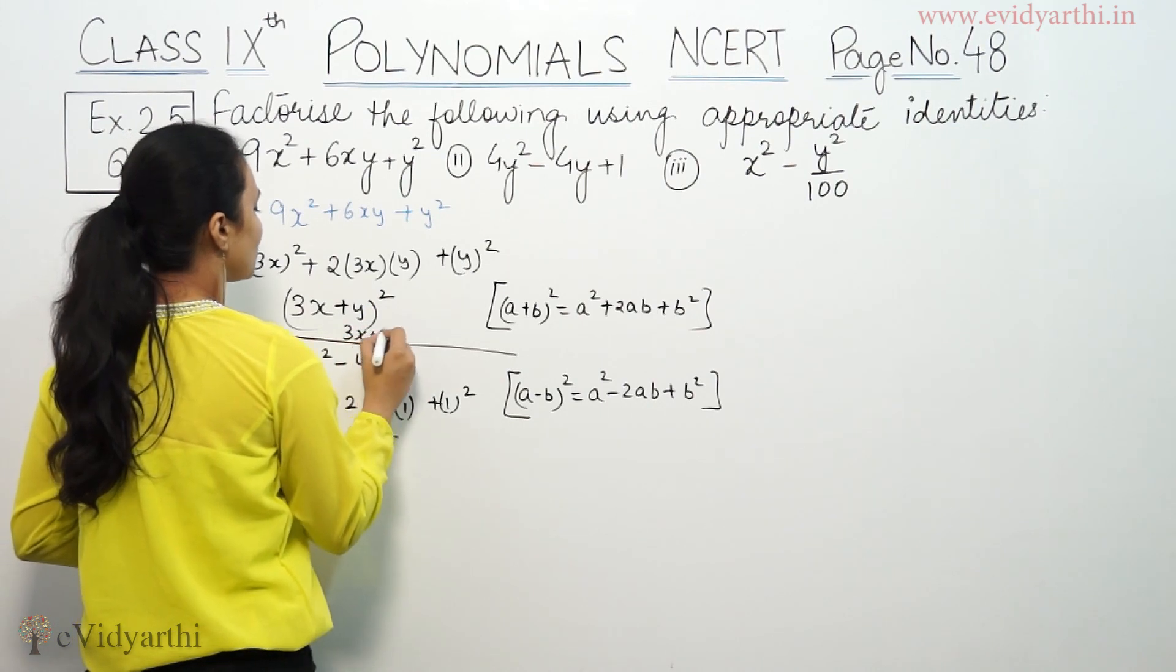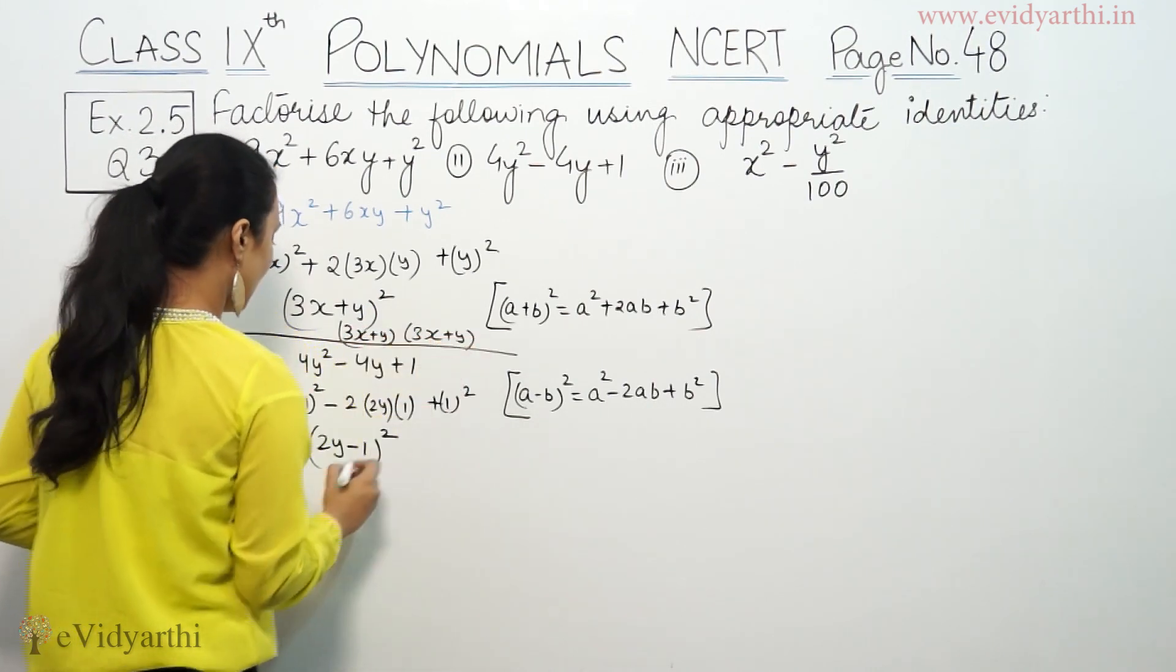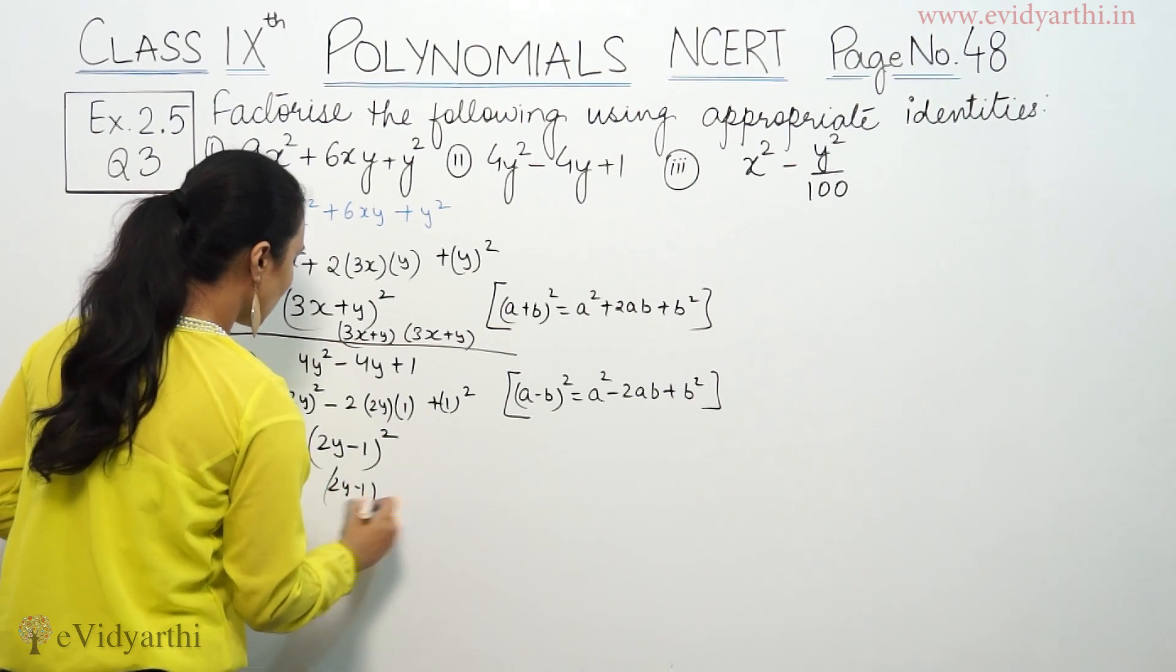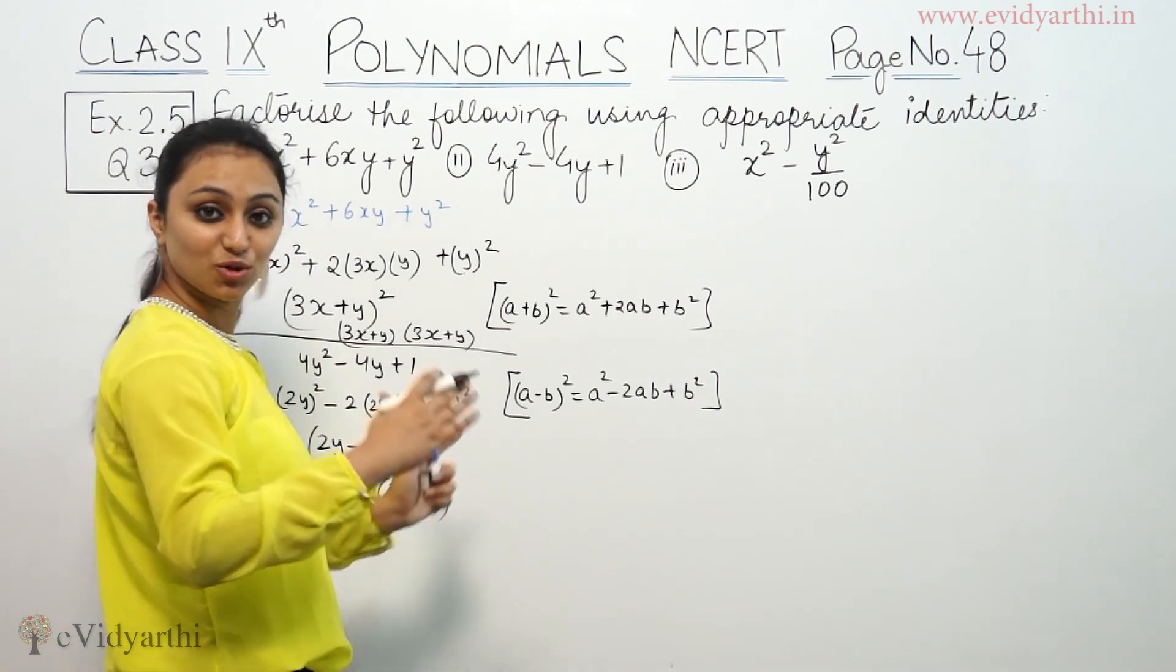So, this is 3x plus y, 3x plus y. This is 2y minus 1, 2y minus 1. Because square is two parts.